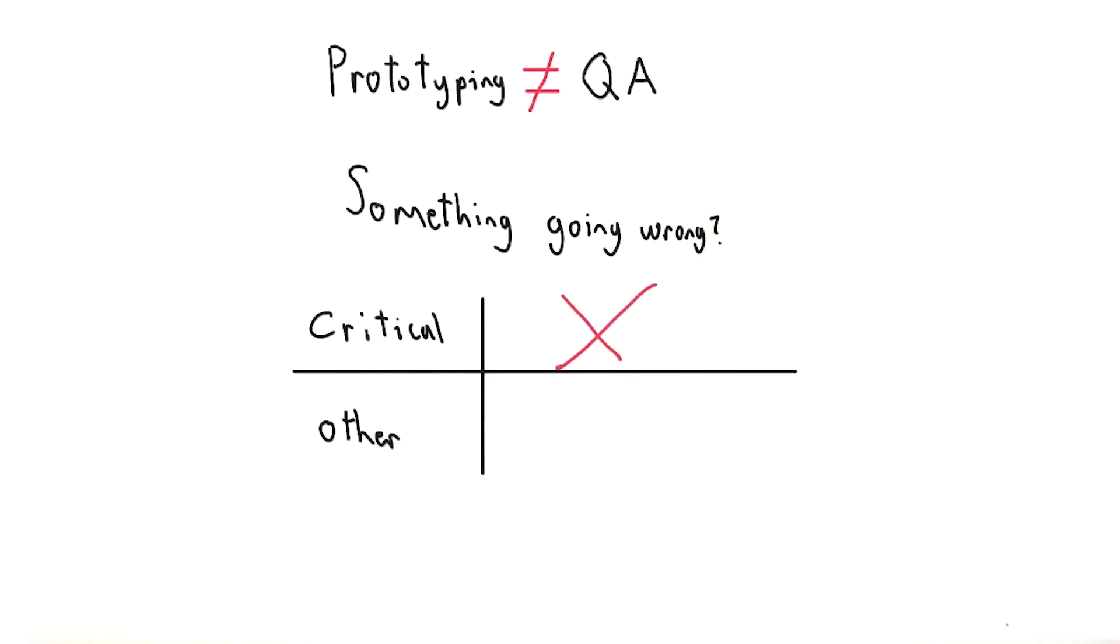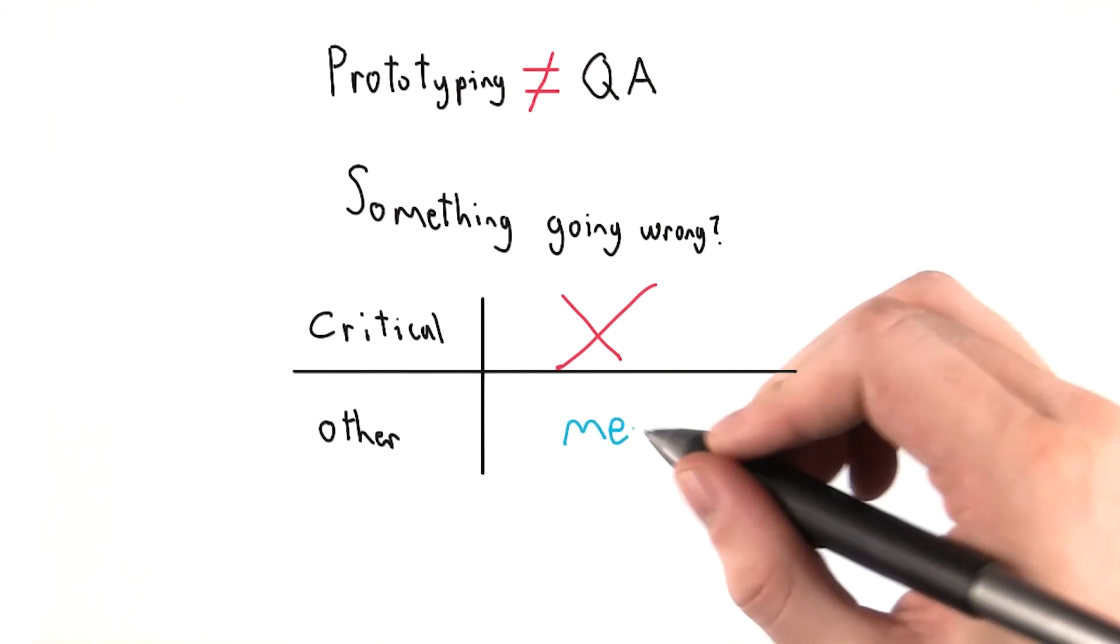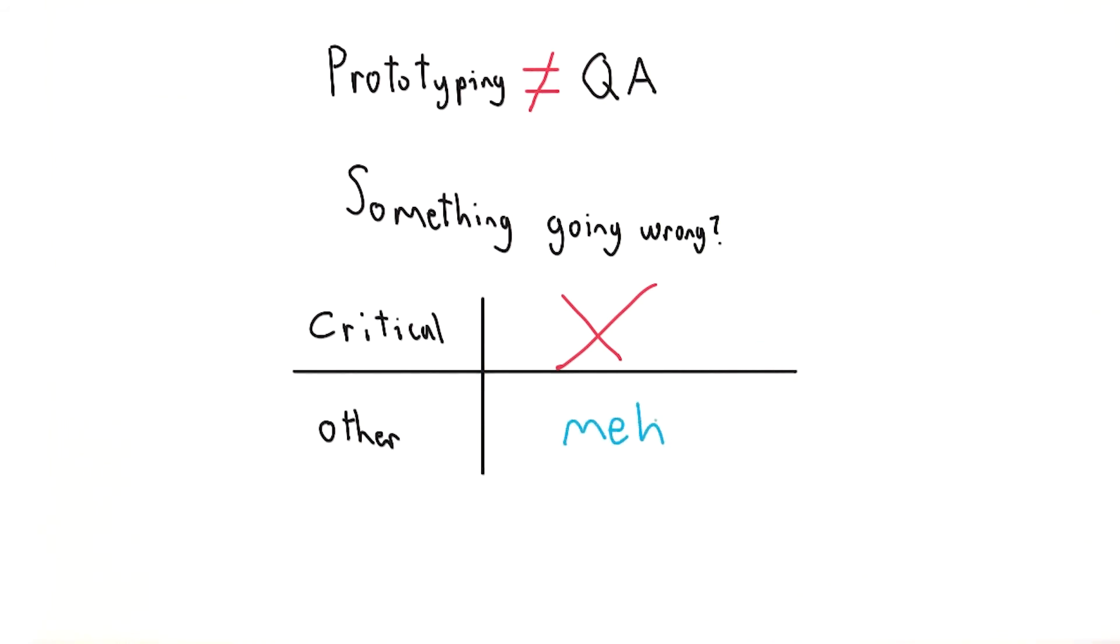If a less critical part of the app is going wrong from multiple users, you're probably still fine and can iron that out in medium fidelity prototypes.